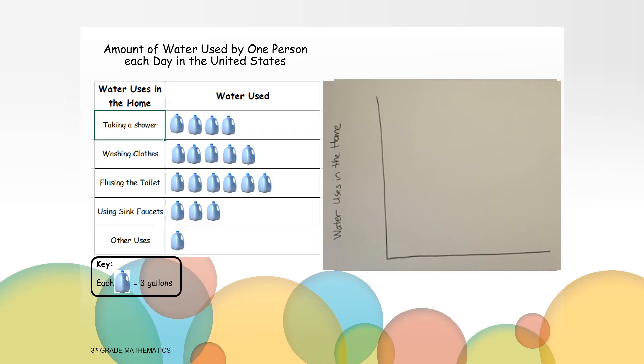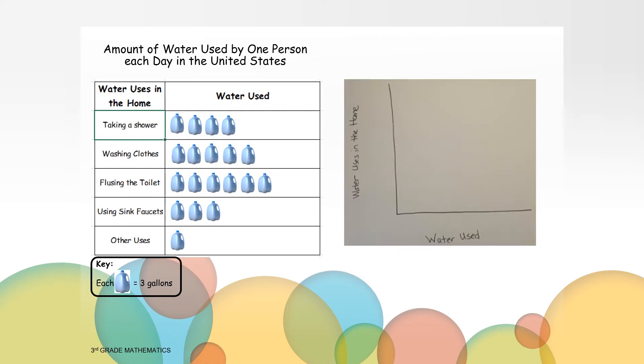So the vertical axis, which is the Y axis, will be labeled with water uses in the home. And the horizontal axis, which is the X axis, will be labeled water used. Now let's label the Y axis with the five different categories.